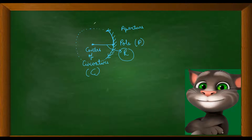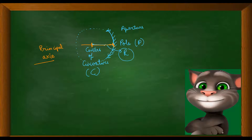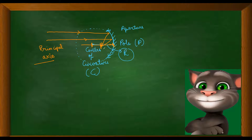We have the pole and the center of curvature. The axis which connects the center of curvature to the pole is known as the principal axis. The distance between the pole and the principal focus: all the rays which come parallel and are incident on the reflecting surface of the mirror get converged after reflecting to a point known as the principal focus of the mirror. The distance between the pole and the principal focus is known as the focal length, represented by small f.